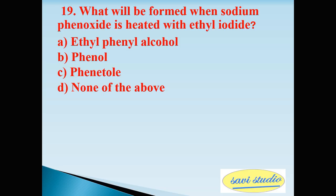Nineteenth question: what will be formed when sodium phenoxide is heated with ethyl iodide? Option A: ethyl phenyl alcohol, Option B: phenol, Option C: phenetole, Option D: anisole. The right answer is C: phenetole.